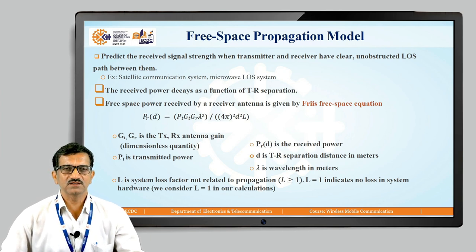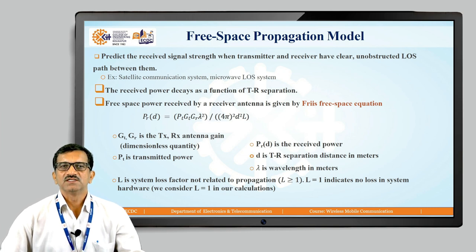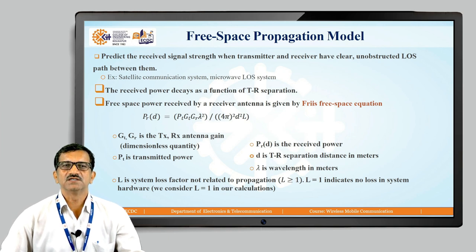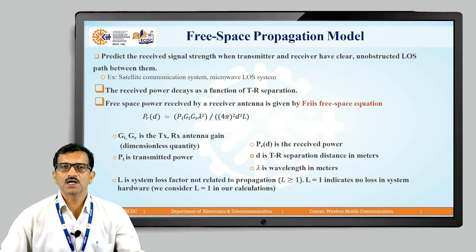That equation is: PR equals PT × GT × GR × λ² divided by (4π)² × d² × L. GT and GR are the gains of the transmitting and receiving antennas respectively. PT is the power of the transmitting antenna, PR is the received power by the receiving antenna. D is the separation between transmitting and receiving antennas. Lambda (λ) is the wavelength in meters. L is the loss factor not related to propagation; L equals 1 indicates no loss in the system.